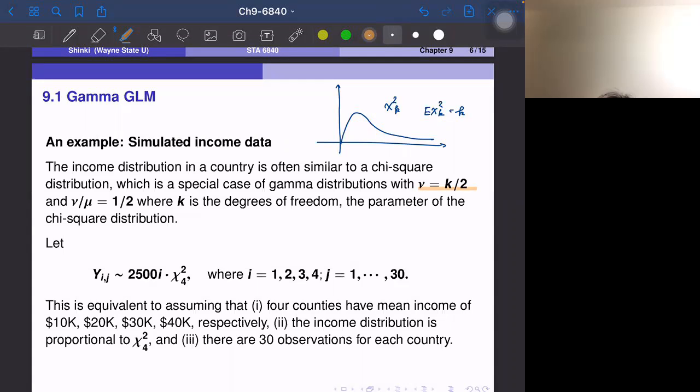The parameter ν is equal to K over two. So this is the exponent, the power part of Y. And then ν over μ. This is the exponential part, the coefficient of the exponential part. That is one half.